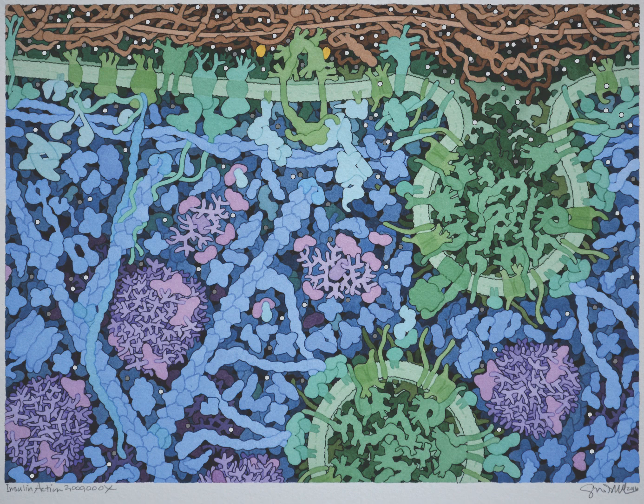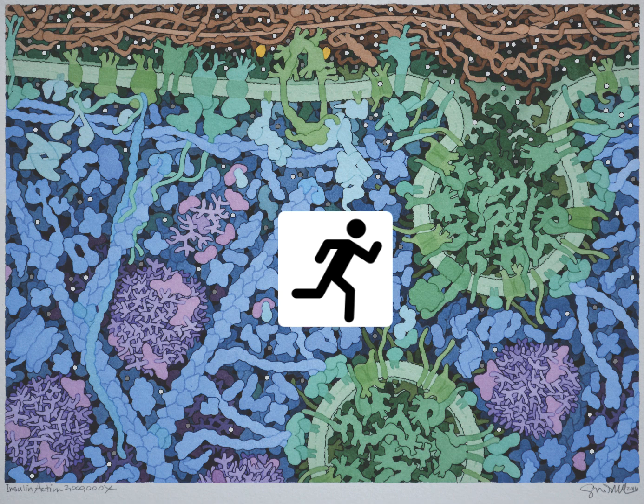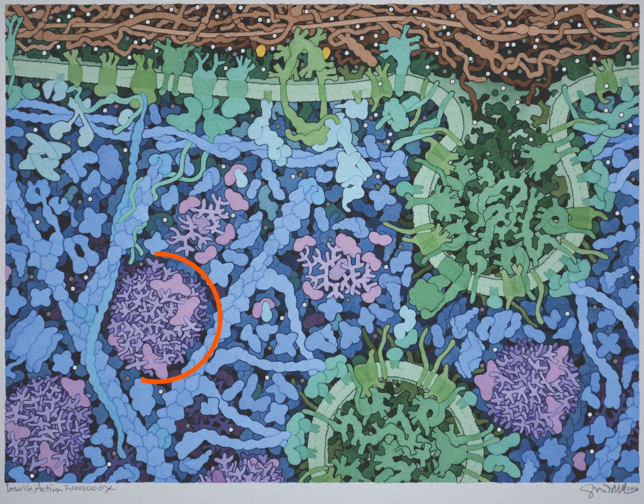Once inside the cell, the glucose is either used up for energy or growth, or stored in the form of glycogen, shown as these purple branched structures.